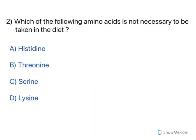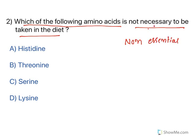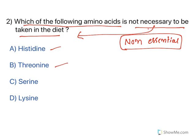Moving to the next one. On the same year in November 2020, on the same concept there is another question: which of the following amino acids is not necessary to be taken in the diet? This is asking which of the following is a non-essential amino acid — meaning which amino acid is synthesized in the human body. If you check the PV-MALT-HILT mnemonic, serine is not there. So serine is synthesized in the human body and is a non-essential amino acid — it is not necessary to be taken in the diet. Two different kinds of questions were asked on the same concept.